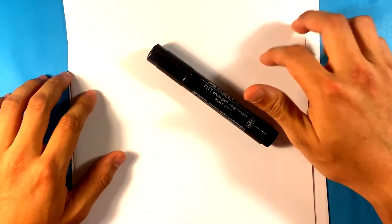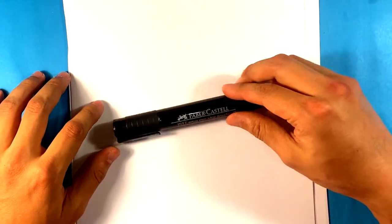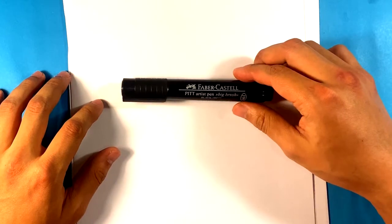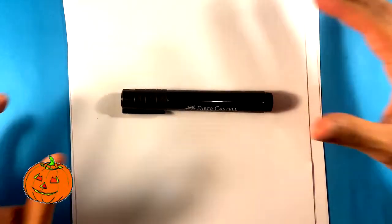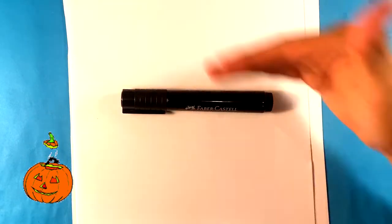I'm going to be using this paper, which is basically computer paper, and I'm going to be using this Faber-Castell marker. You can use whatever marker you want, you can use a pencil if you want. This one's not going to be big on shading in masses of black, so it's fine. So anyways, let's get started.